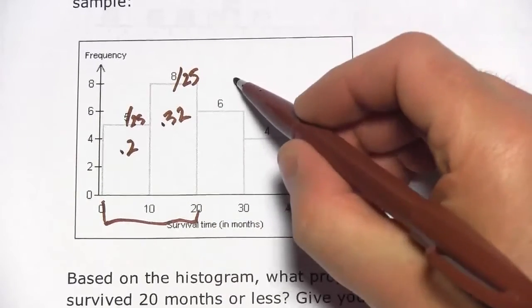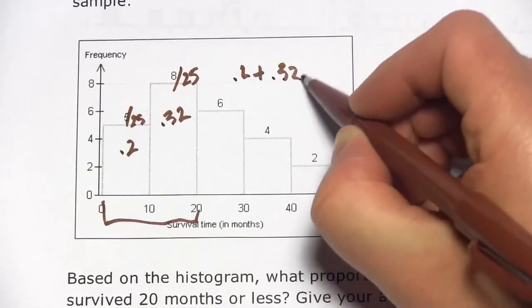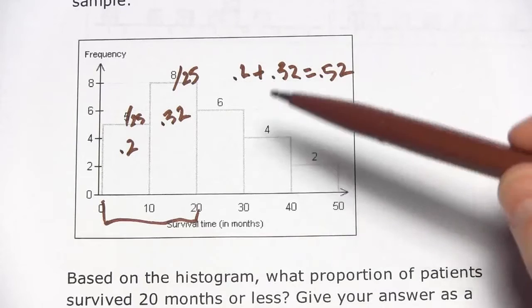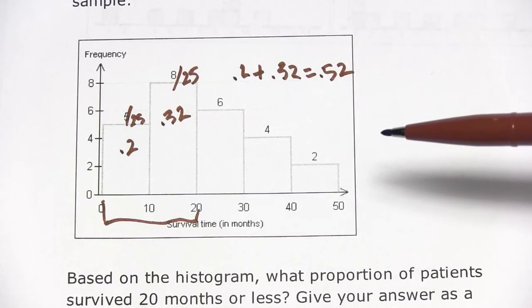And you add those together, you get 0.52. So 0.52 of this sample survived from 0 to 20 months.